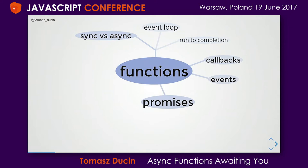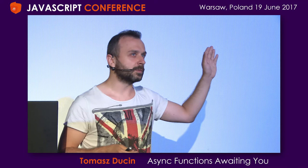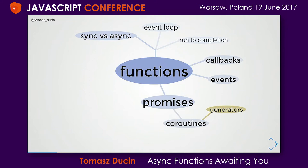At some point, promises were introduced to JavaScript, and I guess this is something we are mostly familiar with. So how many of you understand promises? It's a whole room — brilliant, I expected that. So if we take promises and add them with generators, we get something called coroutines.